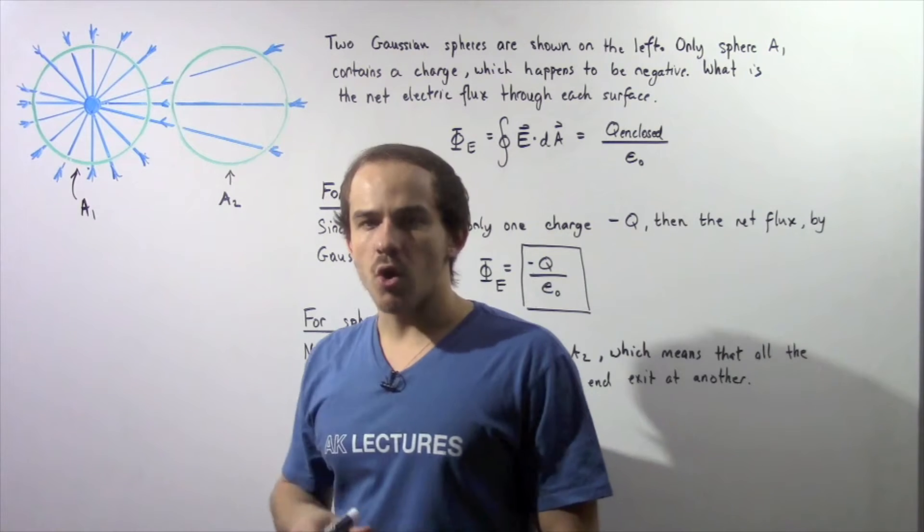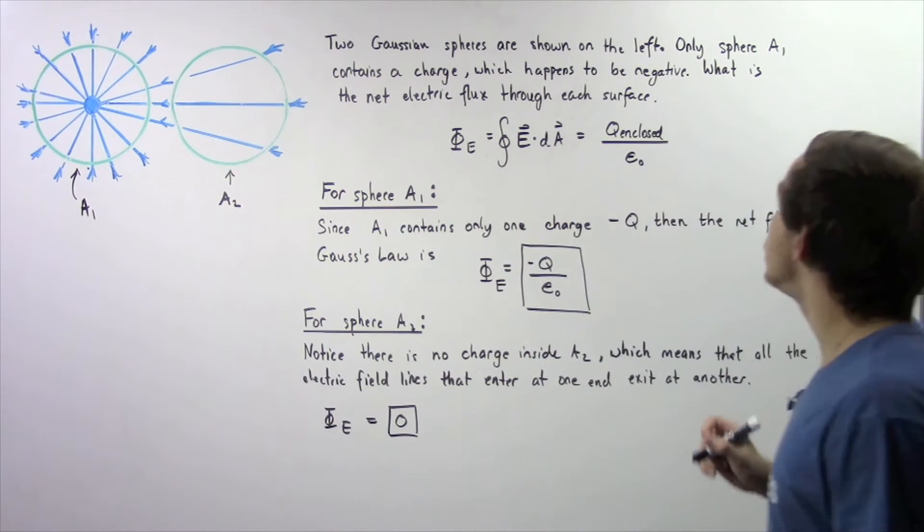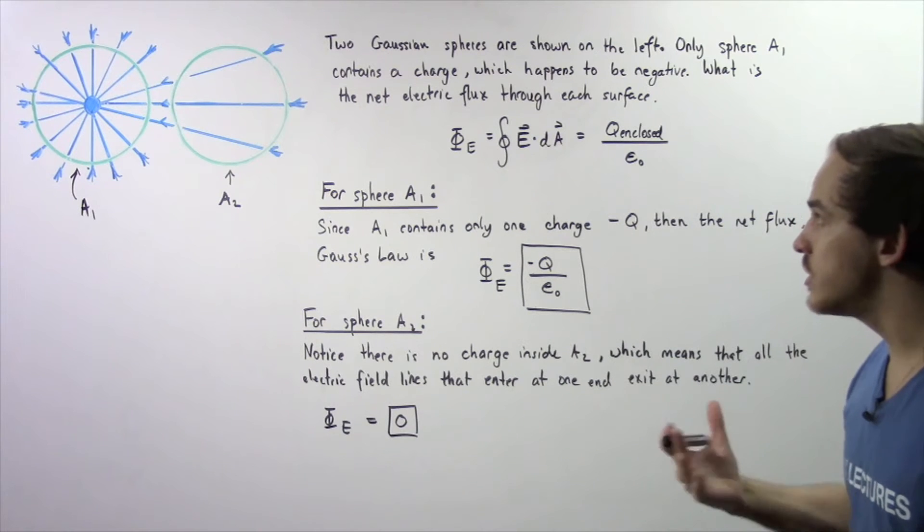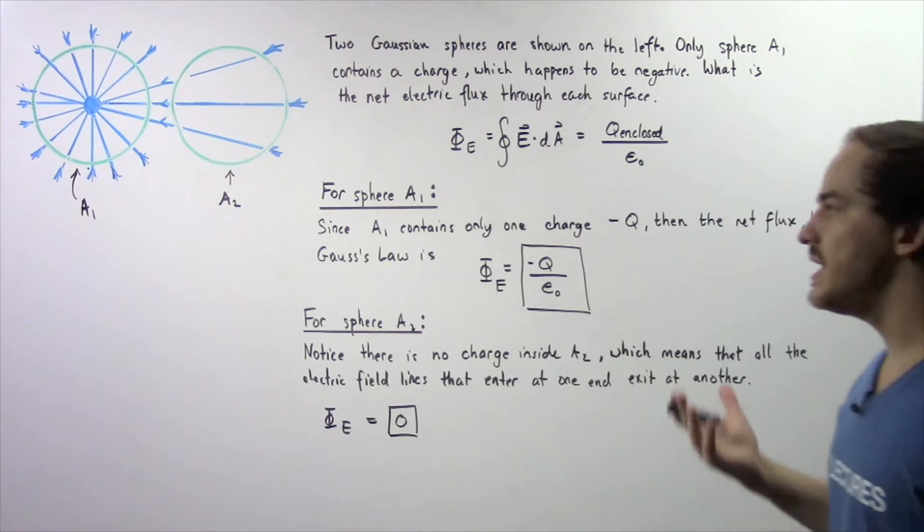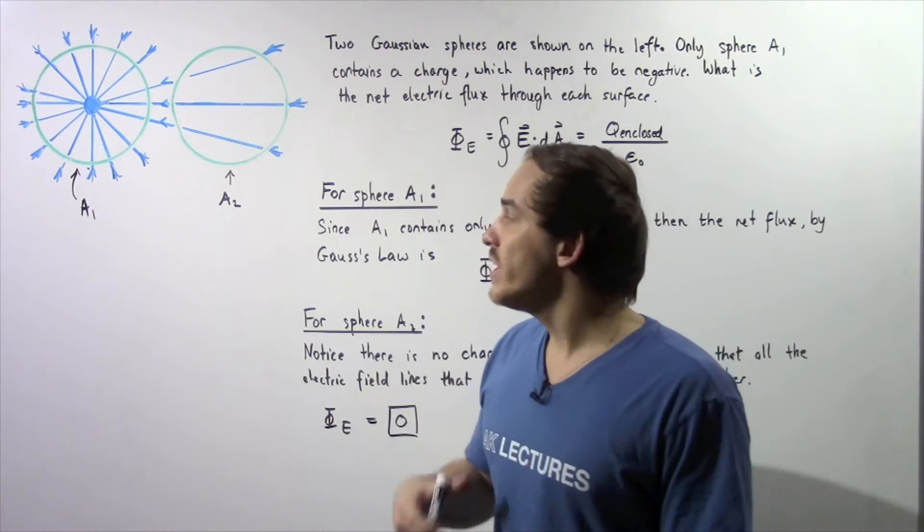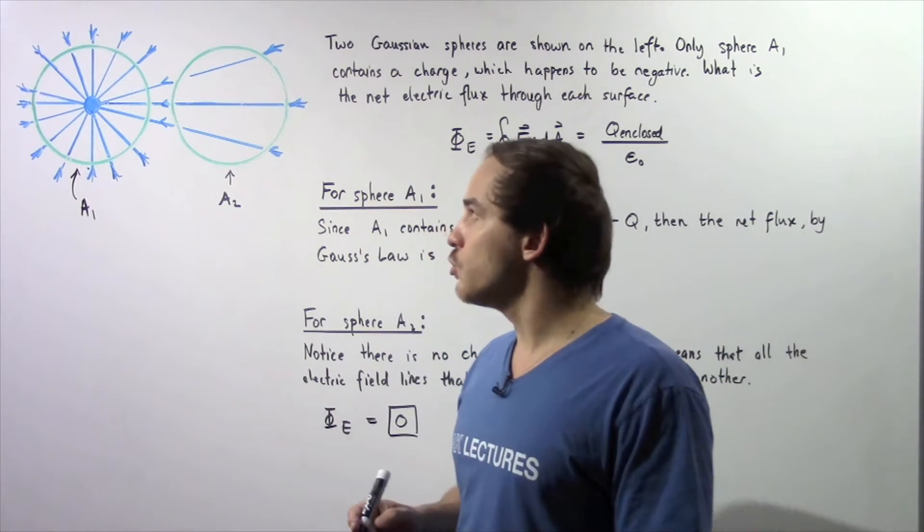Both of these spheres, let's suppose, are three-dimensional. Now, only sphere A1 contains a charge, and this charge happens to be a negative charge. And let's suppose it's given by negative Q, negative uppercase Q.